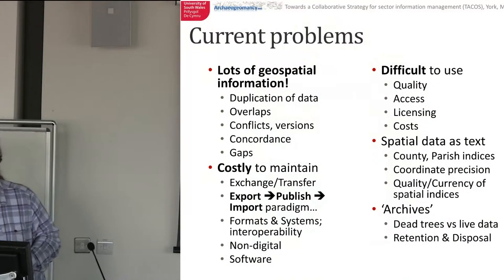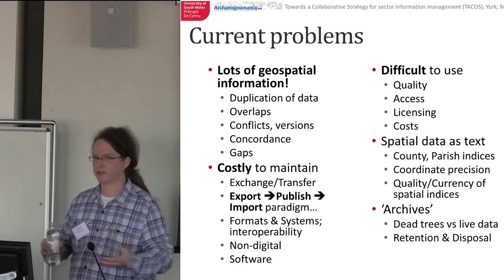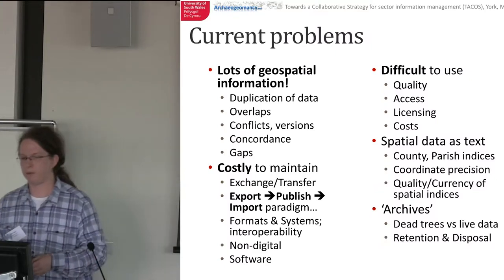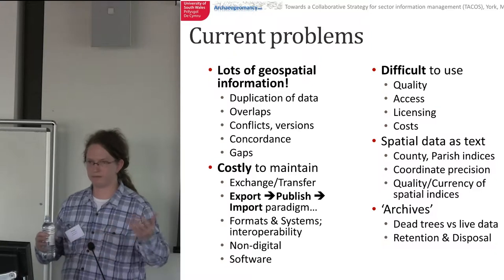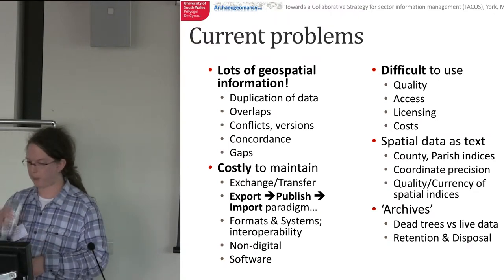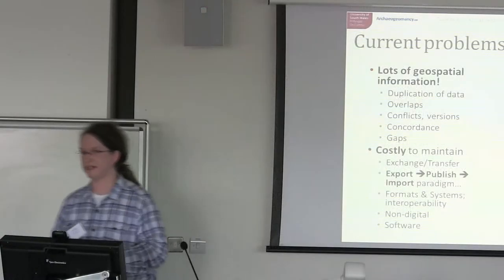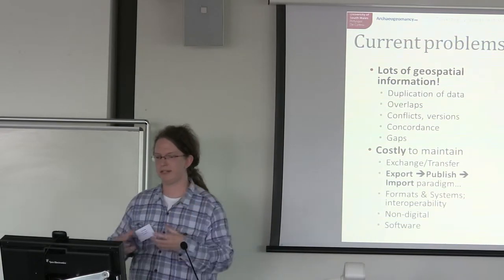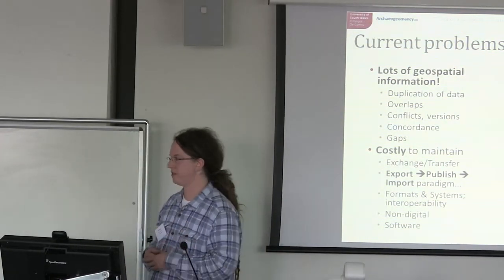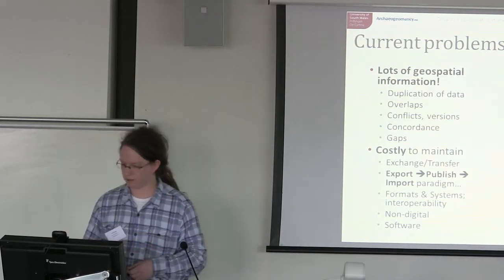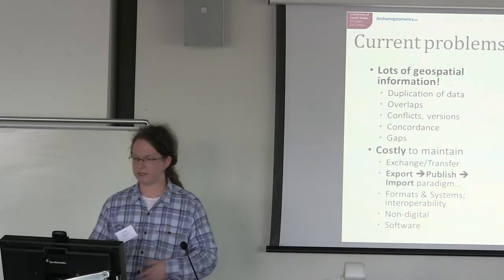Basically, we've got a lot of data out there. The big problem is this data is managed in a very disparate way, so we have a lot of duplication — not for any particular good reason in many cases. It overlaps, it conflicts, and we have issues concording where we have the same thing referred to in different resources. Maintaining this infrastructure is costly. Constantly exchanging, transferring, exporting, publishing, and reimporting takes time and drains resources. This is compounded by issues of formats, systems, interoperability, and the perennial bugbear of non-digital data or digital data such as PDF, which isn't particularly spatial data.